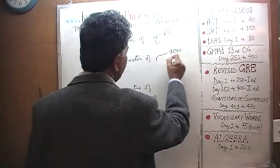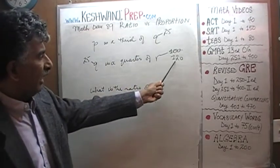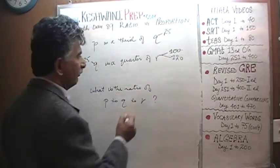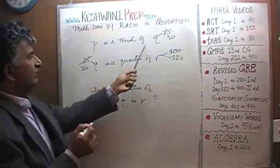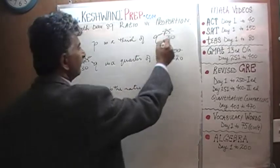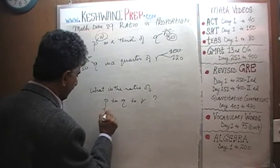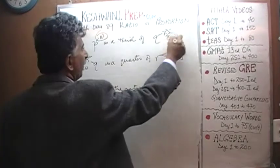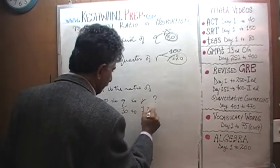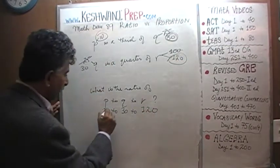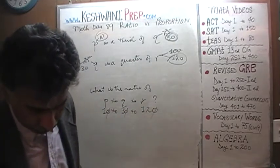Instead of one hundred, let's pretend R is one twenty. Q is a quarter of R — if R is one twenty, then a quarter of that is thirty. So Q is now thirty. And we are told that P is a third of Q — if Q is thirty, P would have to be ten. That's it, we are done. Now we have the nice numbers: P is ten, Q is thirty, R is one twenty. They all end in zero, so the ratio simplifies to one to three to twelve. One to three to twelve is the answer.